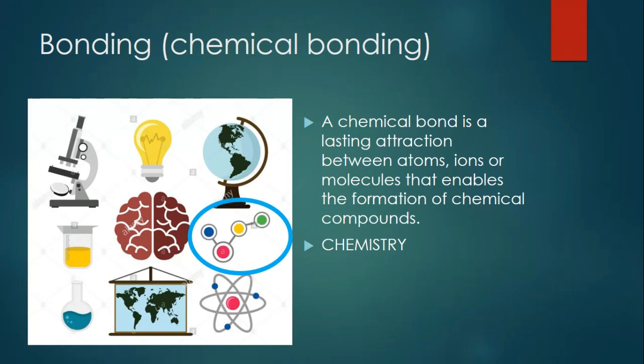There are two main types of chemical bonds that hold atoms together, covalent and ionic bonds. Atoms that share electrons in a chemical bond have covalent bonds. And the other type is ionic bonds.